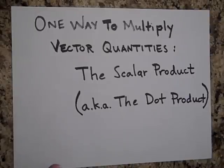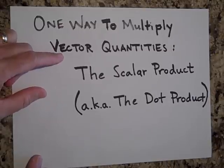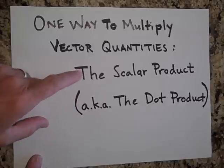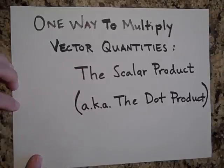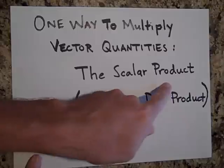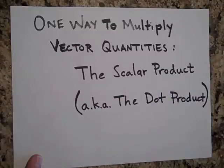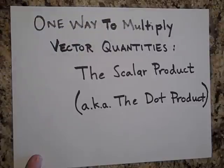I want to tell you about one way to multiply vector quantities together — it's called the scalar product, sometimes also called the dot product. It's called the scalar product because when you multiply two vectors using it, you get a scalar quantity. It's called the dot product because you use a dot to represent the multiplication of the two.